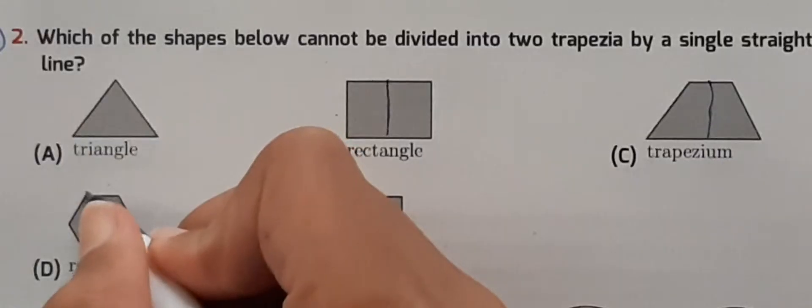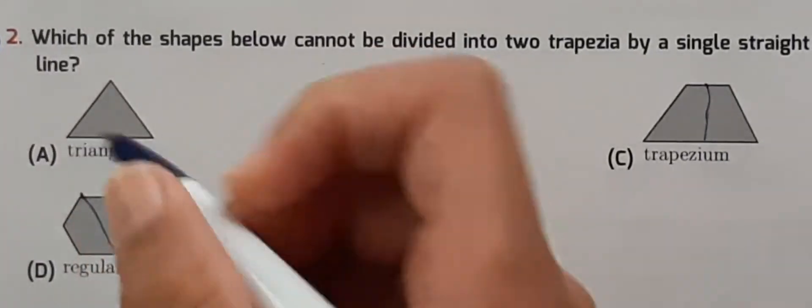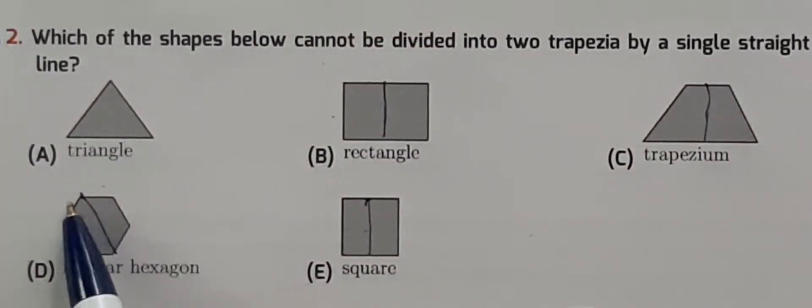In the regular hexagon, if we draw a line like this, it also makes trapeziums with four sides and two sides parallel to each other.